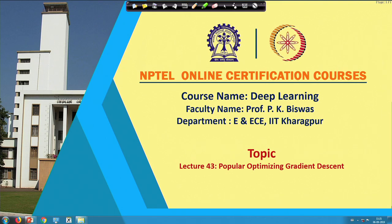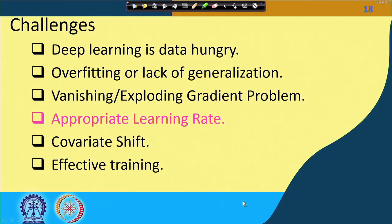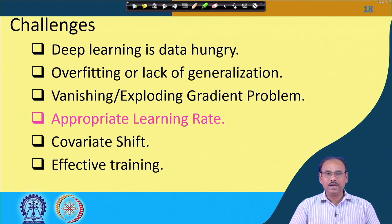Hello, welcome to the NPTEL online certification course on Deep Learning. Since our last class we were discussing about the various challenges faced during the training of Deep Neural Networks. One of the challenges currently being discussed is how to choose the appropriate learning rate, or what will be the rate of convergence of the learning algorithm.